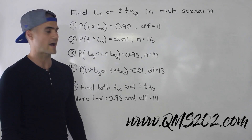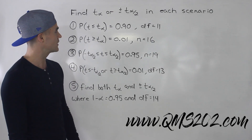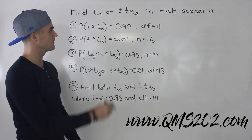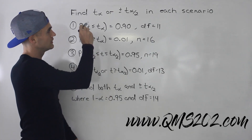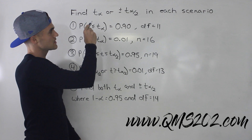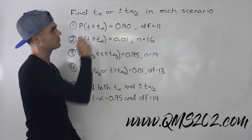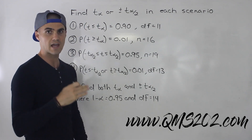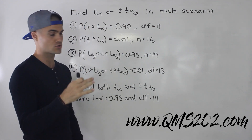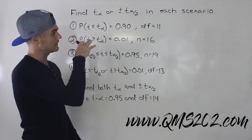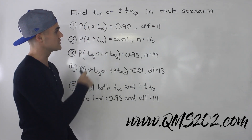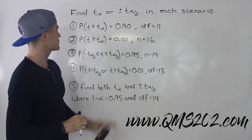Hey, what's going on guys? Welcome back. Moving on to another question. We have to find t subscript alpha, or plus or minus t alpha over 2, in each of these scenarios here.